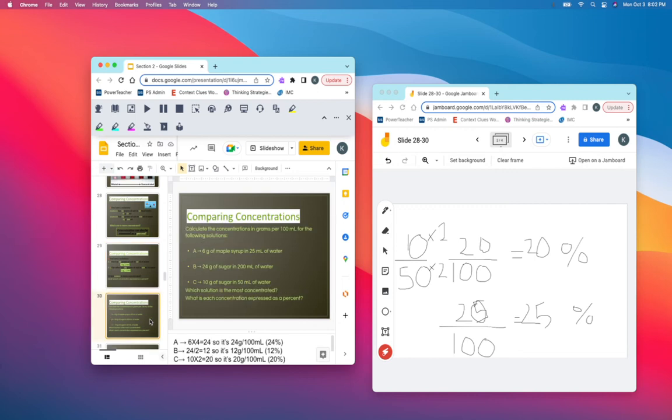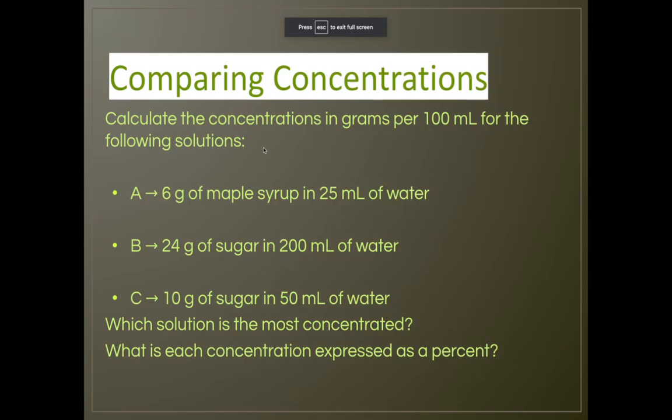That is all review from last class. Now pause the video and answer the following questions. Calculate the concentration in grams per 100 milliliters for: 6 grams of maple syrup in 25 milliliters of water; 24 grams of sugar in 200 milliliters of water; and 10 grams of sugar in 50 milliliters of water. Pause the video and calculate.